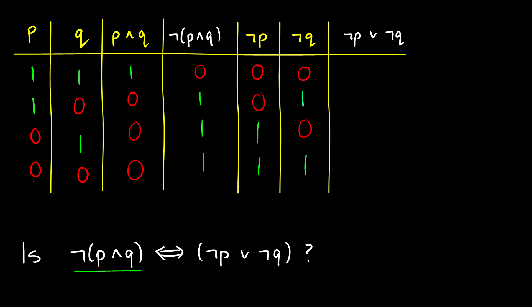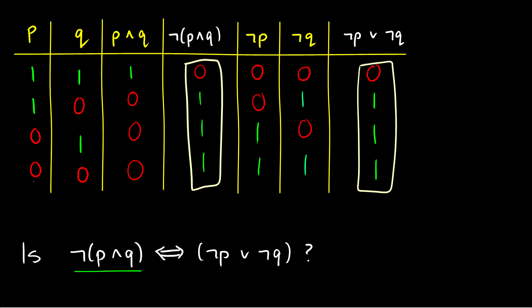Now that we have ¬P and ¬Q, we can compute ¬P∨¬Q, which is true when at least one of them is true. In the first row, ¬P is false and ¬Q is false, so ¬P∨¬Q is false. In the second row, ¬P is false but ¬Q is true, so it's true. In row 3, ¬P is true, so it's true. In the fourth row, both are true, so it's true. The truth conditions match exactly — therefore yes, ¬(P∧Q) and ¬P∨¬Q are logically equivalent. This means in a proof, we can freely substitute one for the other.